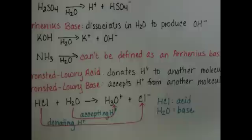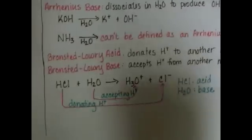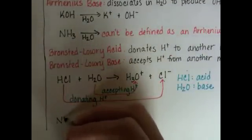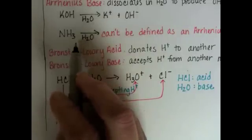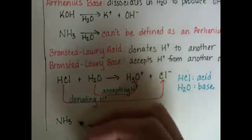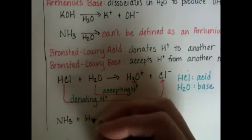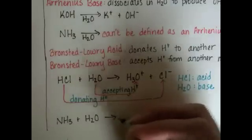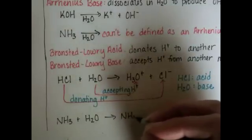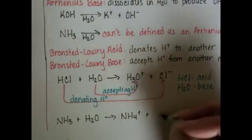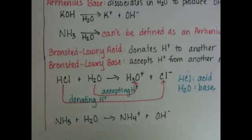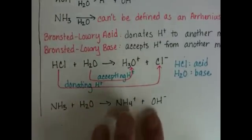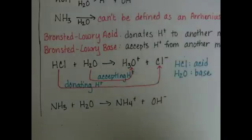Let's do another example. Ammonia, NH3, which we're unable to characterize by the Arrhenius method because it doesn't dissociate at all, reacts with water to produce ammonium, NH4+, and hydroxide, OH-. What we want to do is follow these reactants through the reaction, see what they turn into.